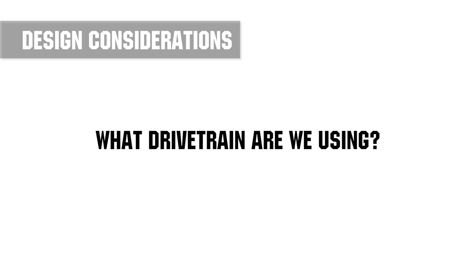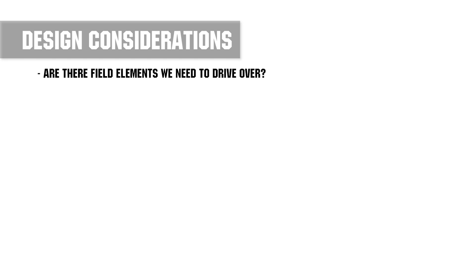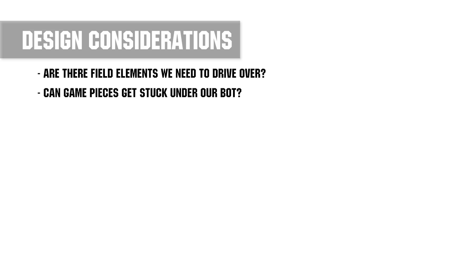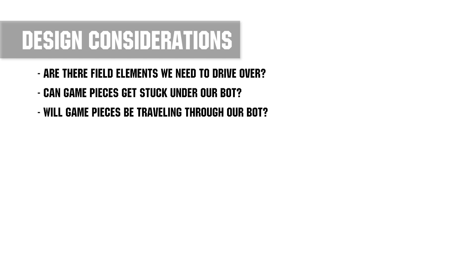Your first design decision may be: what drive base are we running? If your team is new to robotics, I would recommend following the chassis guide published by your build system's manufacturer — it is a great way to get familiar with your build system. Are there any elements on the floor of the field? If so, do we need to go over it? Test out configurations to make sure the chassis can make it over. Are game pieces going to get stuck under our robot? Should we make sure the chassis is high enough to fully clear it or block it off completely? Will we be bringing game pieces into the robot? This may affect motor placement and the shape of the frame — for example, a fully enclosed rectangle versus a U or an H shape.